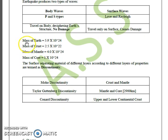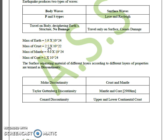The mass of Earth is 5.9 × 10²⁴ kg. The crust has a mass of 2.5 × 10²² kg, the mantle has a mass of 4 × 10²⁴ kg, and the core has a mass of 1 × 10²⁴ kg.